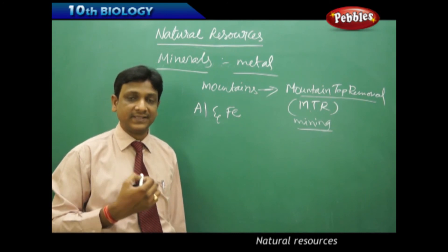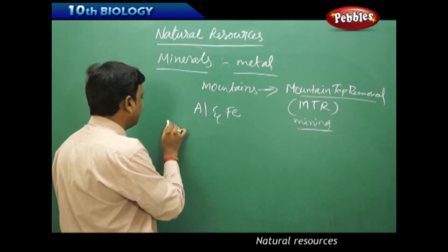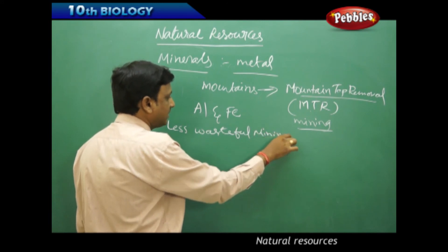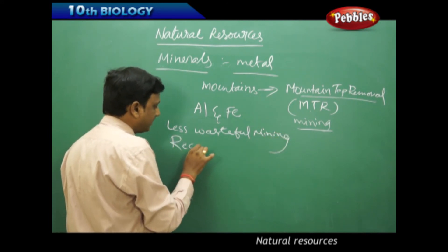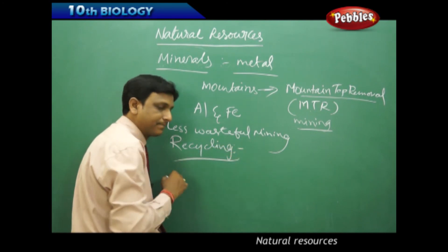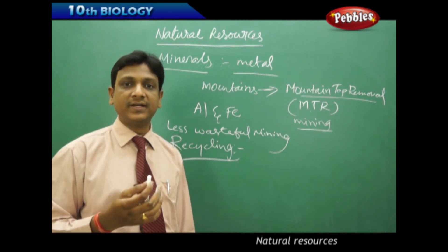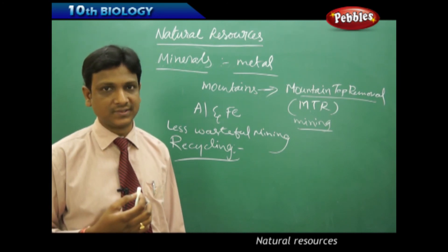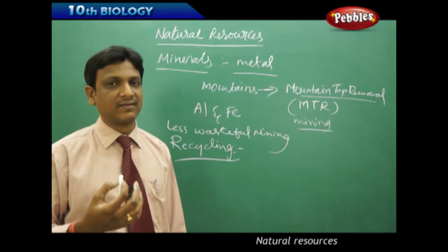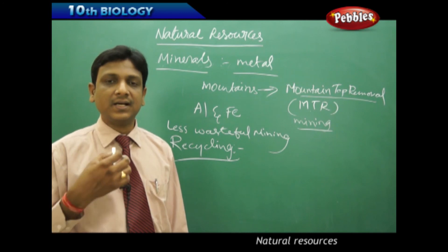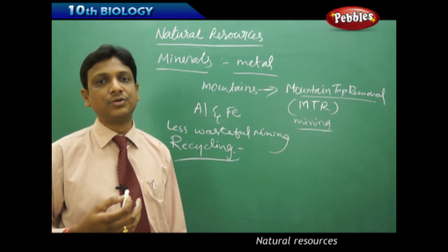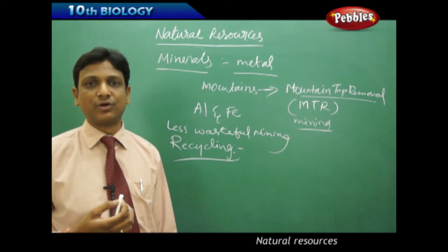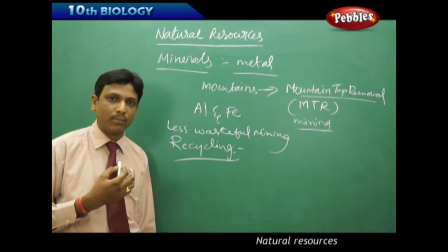So here what we can do is that we can suggest that go for less wasteful mining methods. At the same time, the second important thing is recycling, which is very very important. In countries like Japan, if a car is manufactured, the car manufacturer uses most of the components, recycled components, in manufacturing a car. Instead of taking the raw material. Even in USA we can see that many of the automobile waste is recycled to get that new iron to make new vehicles. So most of that, 70 percent of the iron, they get it from recycling of automobile parts.